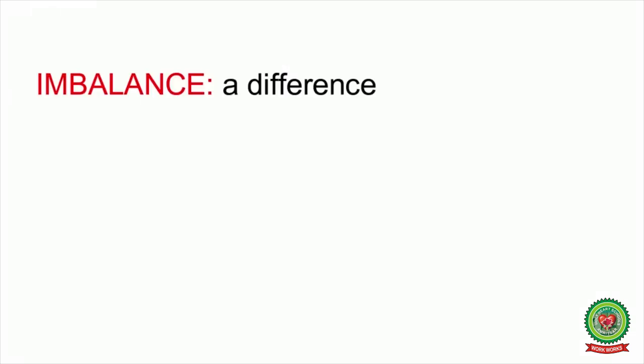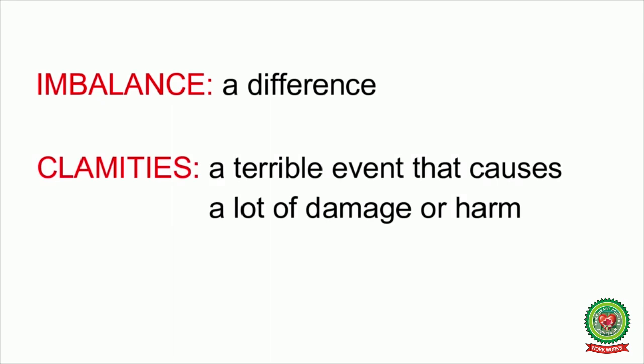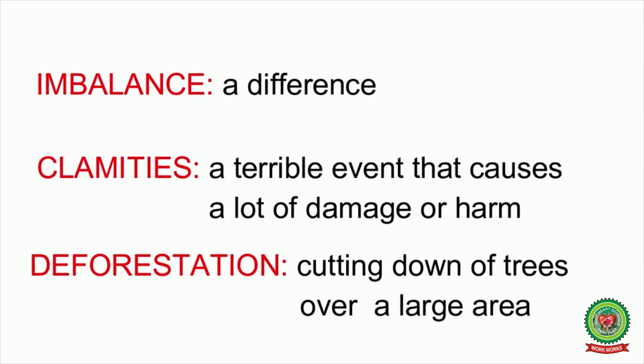Students, underline the word 'imbalance' and write its meaning: a difference. Now underline the word 'calamities' and write its meaning: a terrible event that causes a lot of damage or harm. Now underline the word 'deforestation' and write its meaning: cutting down trees over a large area.